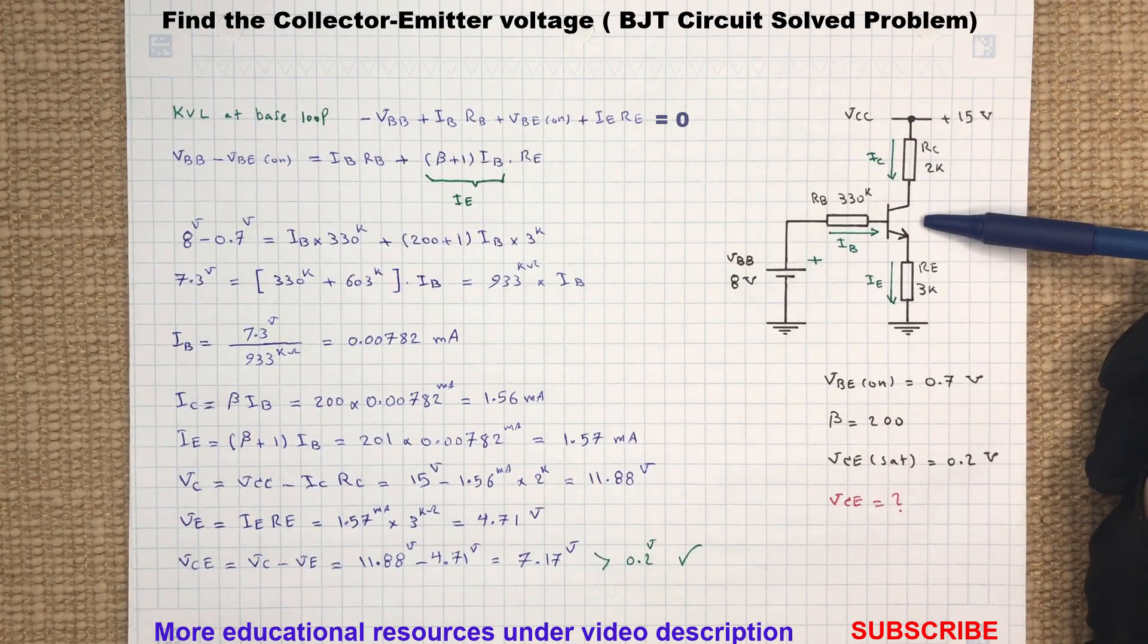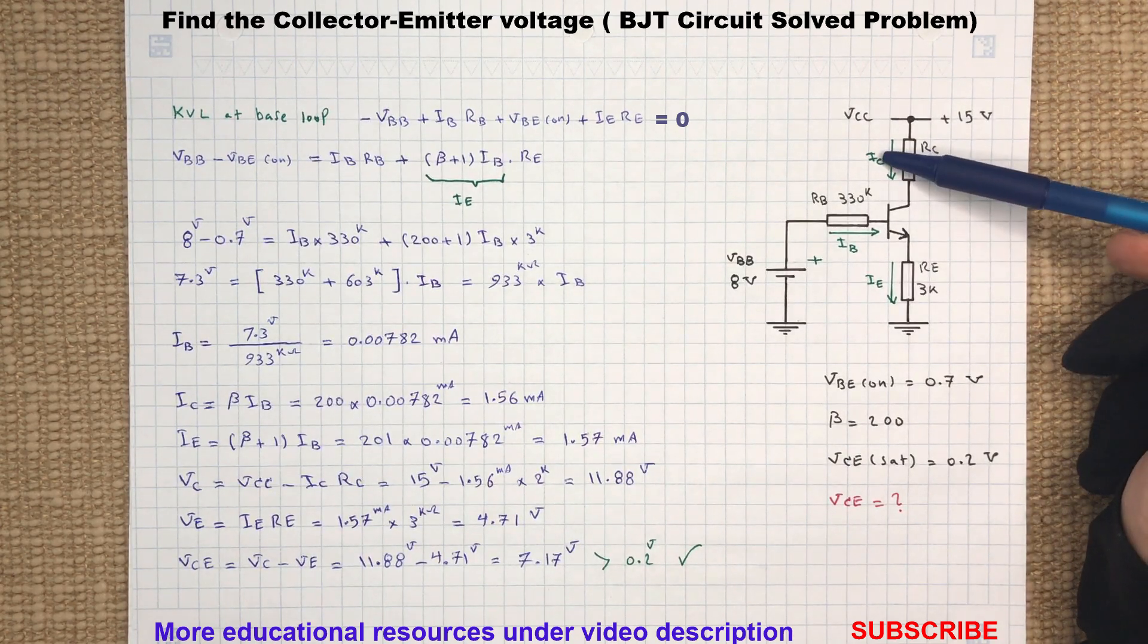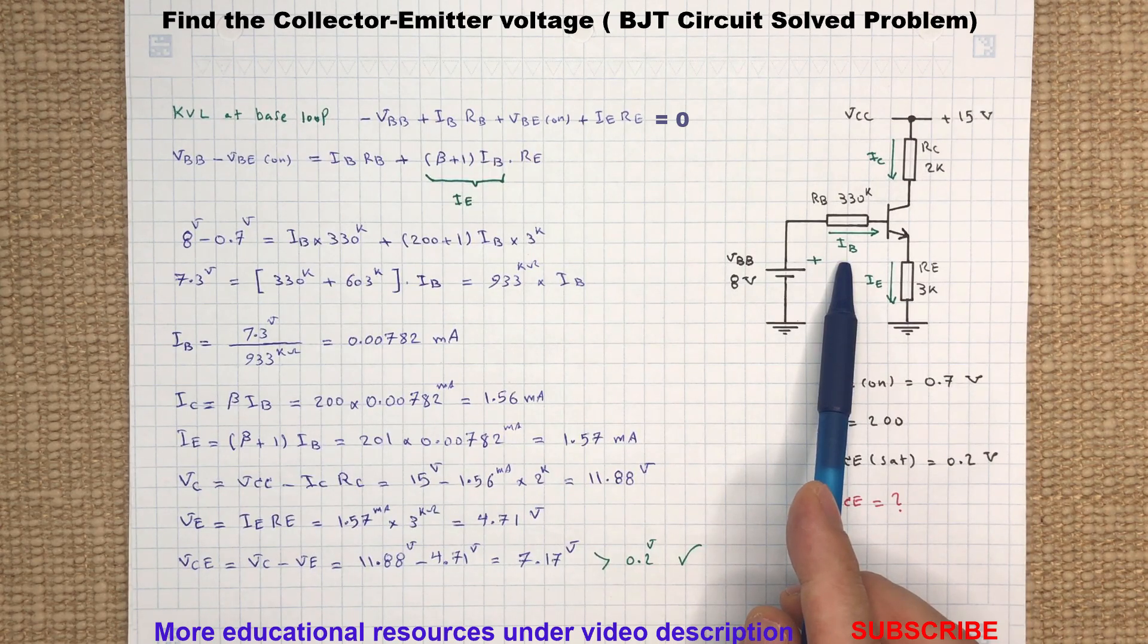In order to find the voltage drop across the collector-emitter terminals, we need to determine the current flowing through the collector and emitter of the transistor. Let's begin with finding the base current because it will help to determine both collector and emitter currents.